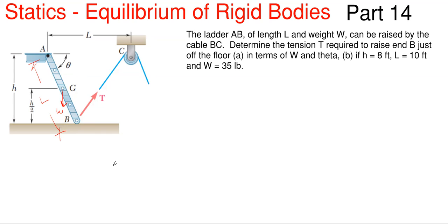So what we're going to have to do in order to find the tension force in the cable, we are going to have to sum moments about the only other reaction point which is A in order to get T. That would involve our weight and our tension force if we sum moments about point A. So we're going to have to get a few things in order to do that — we are going to have to find a few angles within this system.